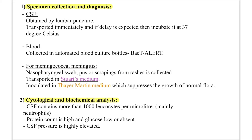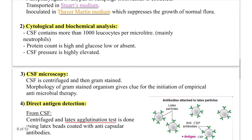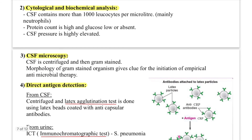Cytological and biochemical analysis of CSF: more than 1000 leukocytes per microliter, predominantly neutrophils. Protein count is raised; glucose count is low or absent. CSF pressure is highly elevated. This section is purely memorization.